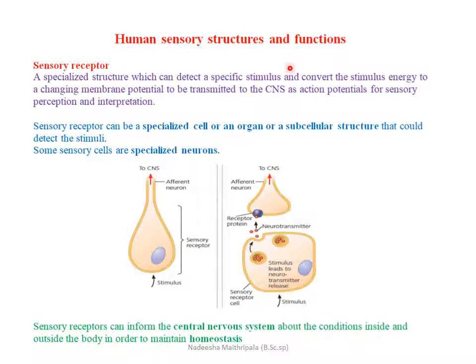Human sensory structures and function. A sensory receptor is a specialized structure that can detect a specific stimulus and convert the energy of that stimulus — such as light energy or sound energy — to a change in membrane potential. The normal membrane potential, known as resting membrane potential, is about minus 60 to 80 millivolts.